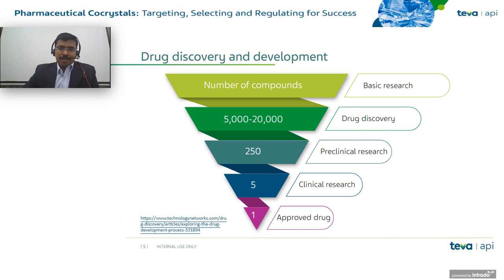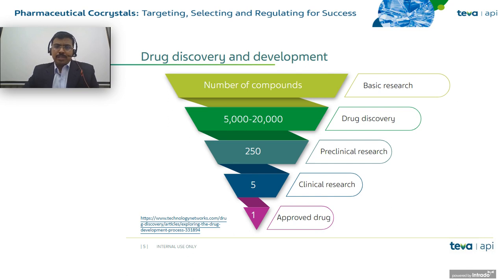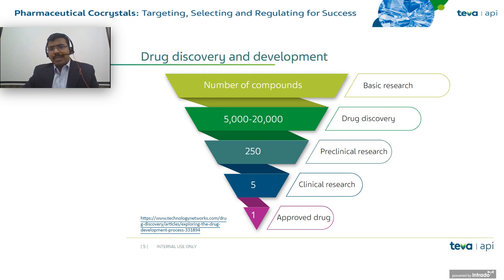Drug discovery and development is a complex, lengthy, and risky process. It takes 10 to 15 years for a drug to get final FDA approval. Drug discovery starts with thousands of molecules. After a stringent regulatory process, it ends up with a few hundred in pre-clinical research and fewer than five in clinical research. Finally, only one molecule will be approved by FDA. Billions of dollars go into this process. Along with selecting the active molecule, selection of the right solid candidate is very important — 70% of drugs approved by FDA are solid.